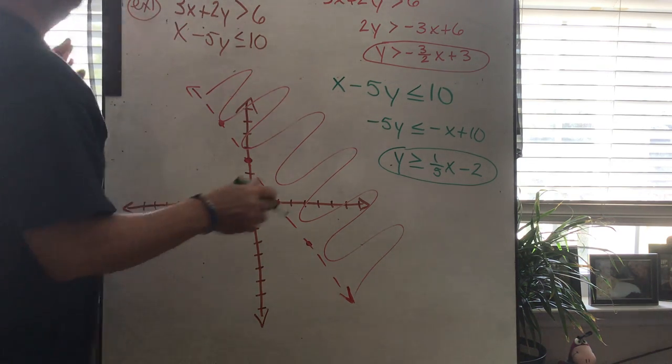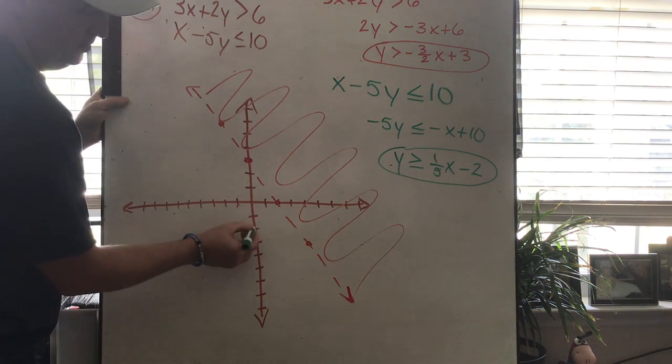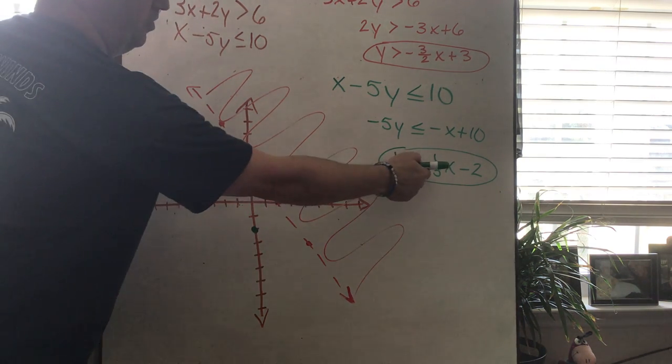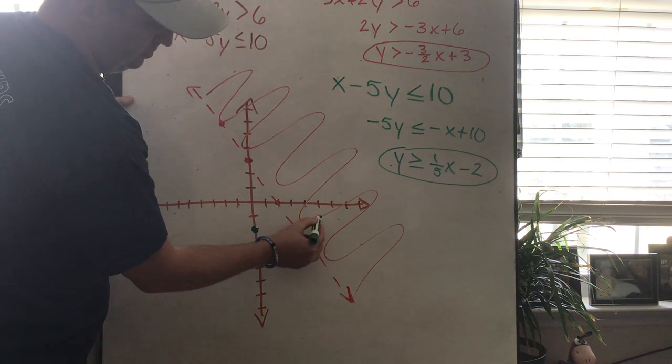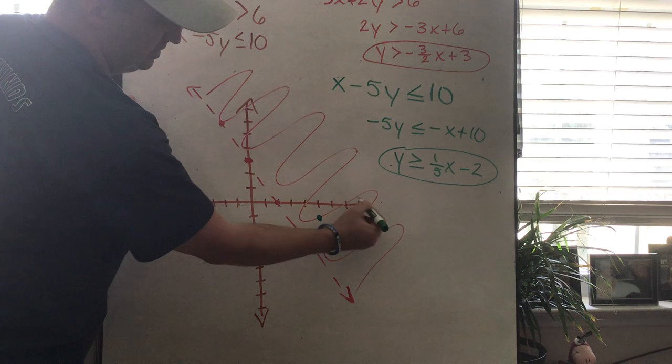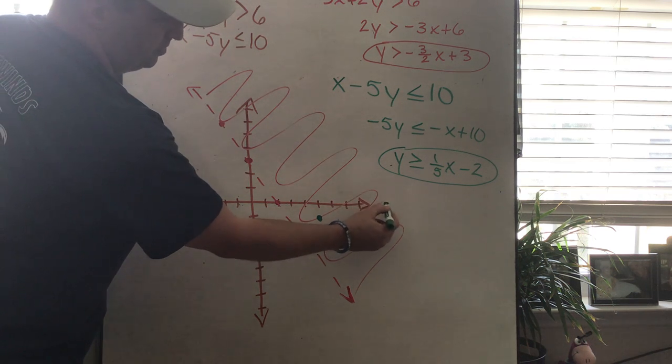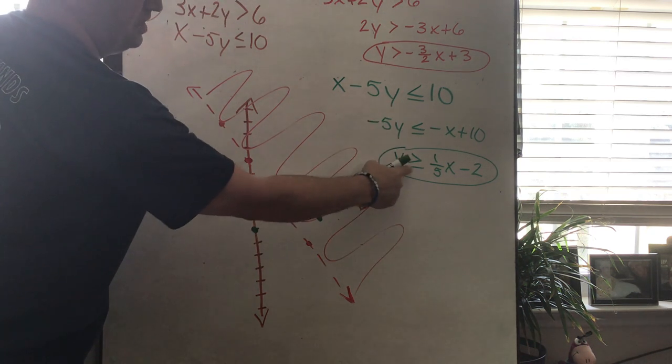The second one, we start at negative 2, down here. I have a slope of 1 fifth, so I go up 1 and over 5. Up 1 over 5, so we're going to hit down here. Come around here.